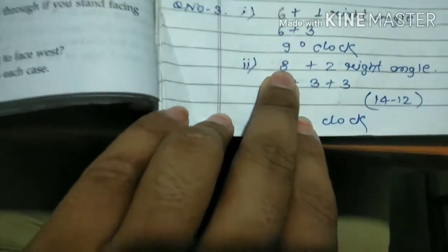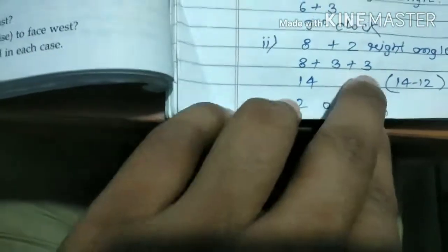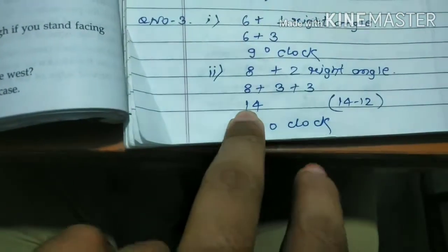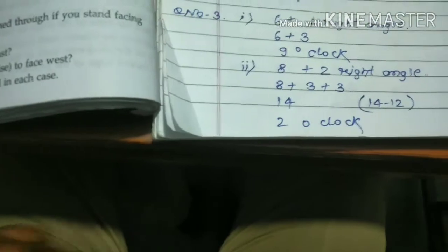Question second: starts at 8, two right angles means 3 plus 3, total 6. 8 plus 6 equals 14. 14 is not on the clock, so we subtract 12. The answer is 2 o'clock.